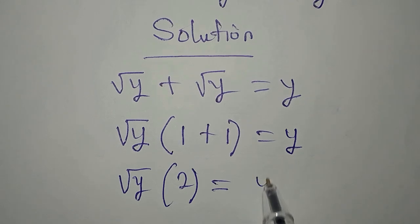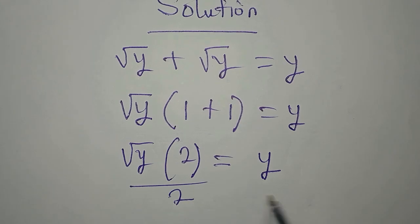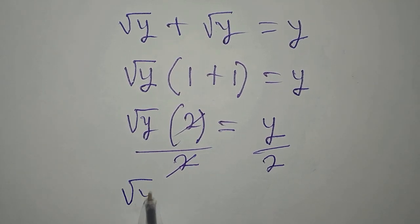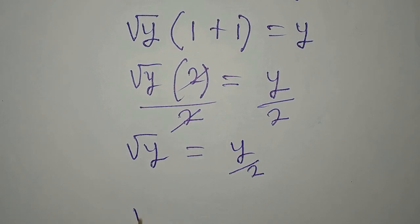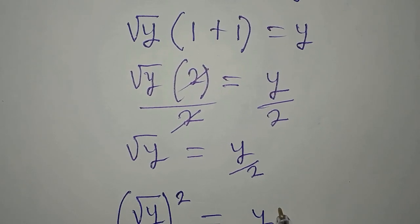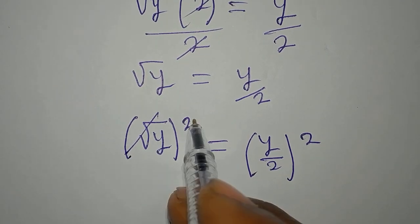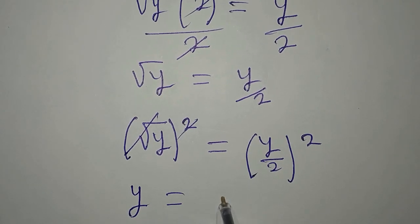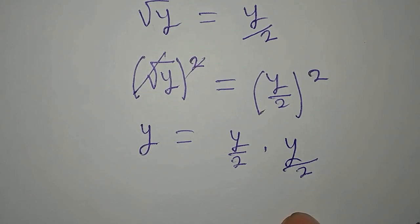So we have square root of y times 2 equal to y. Now divide both sides by 2 so that square root of y equals y over 2. Now we square both sides: square root of y squared equals y over 2 squared, and this will simplify.